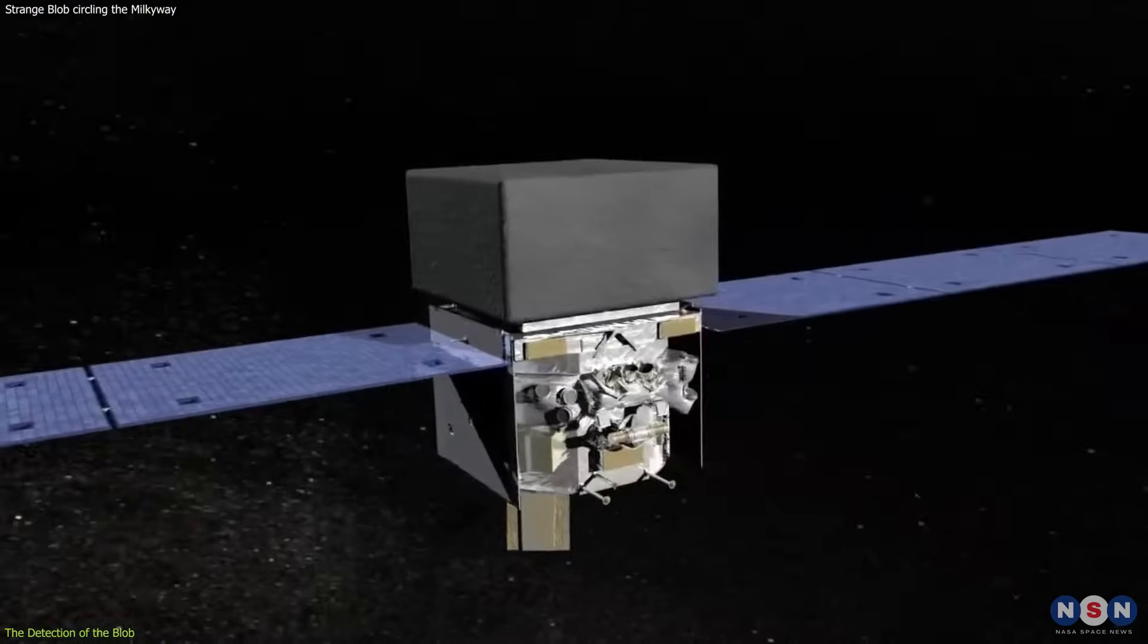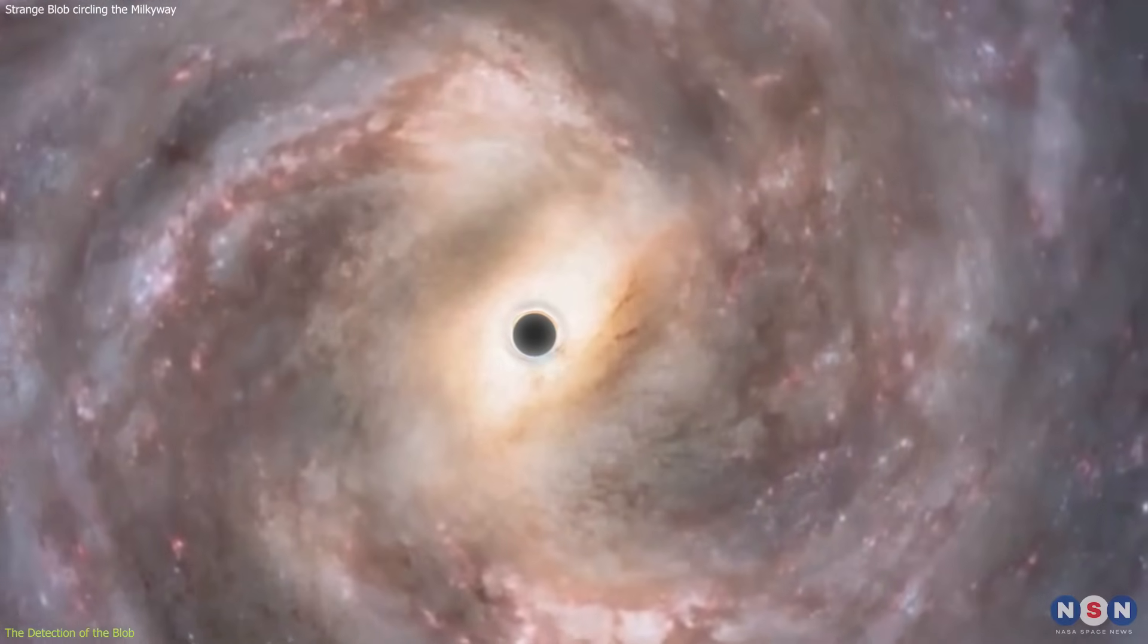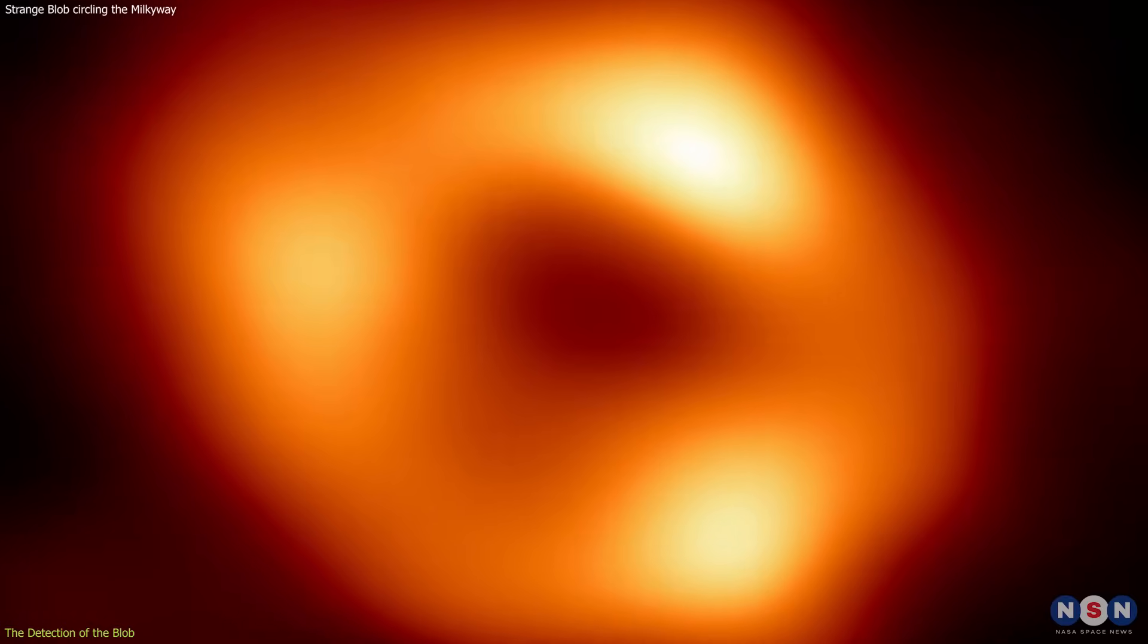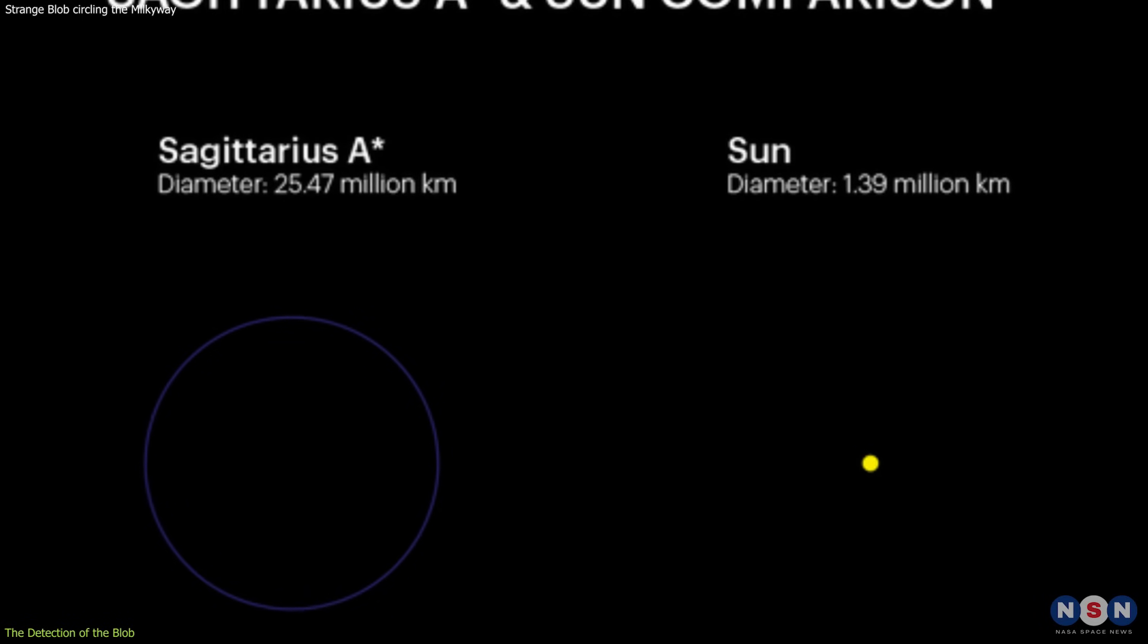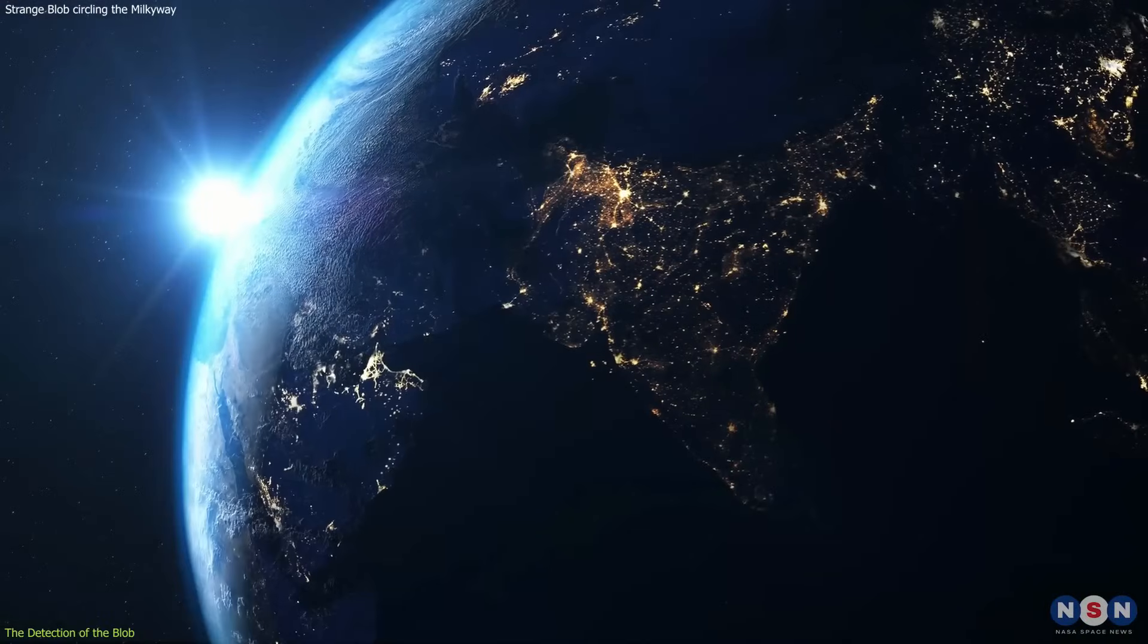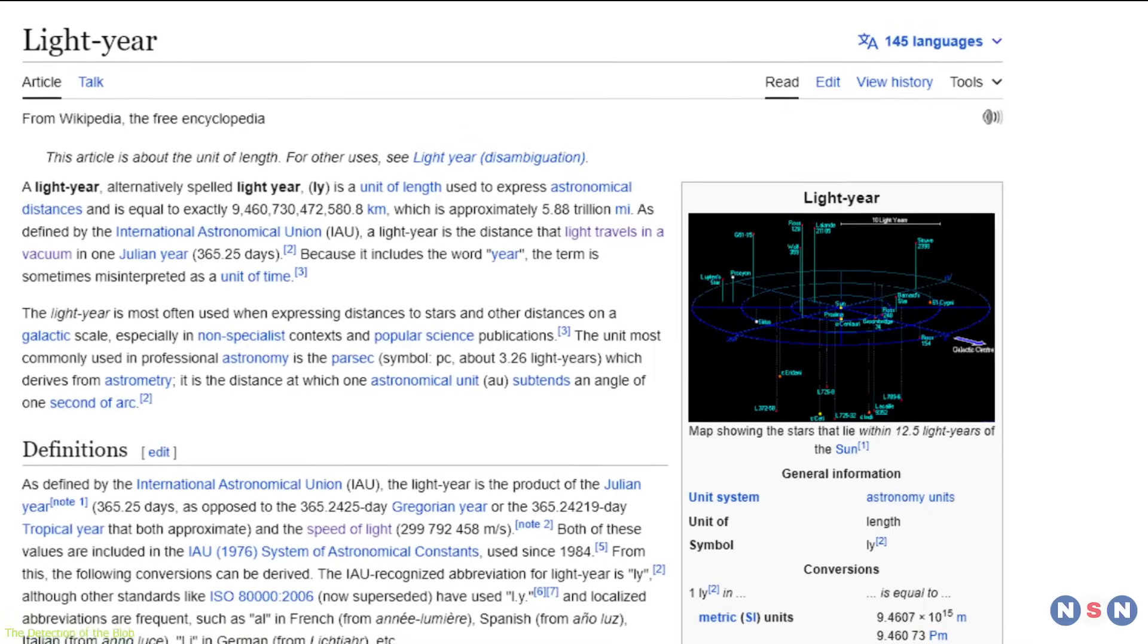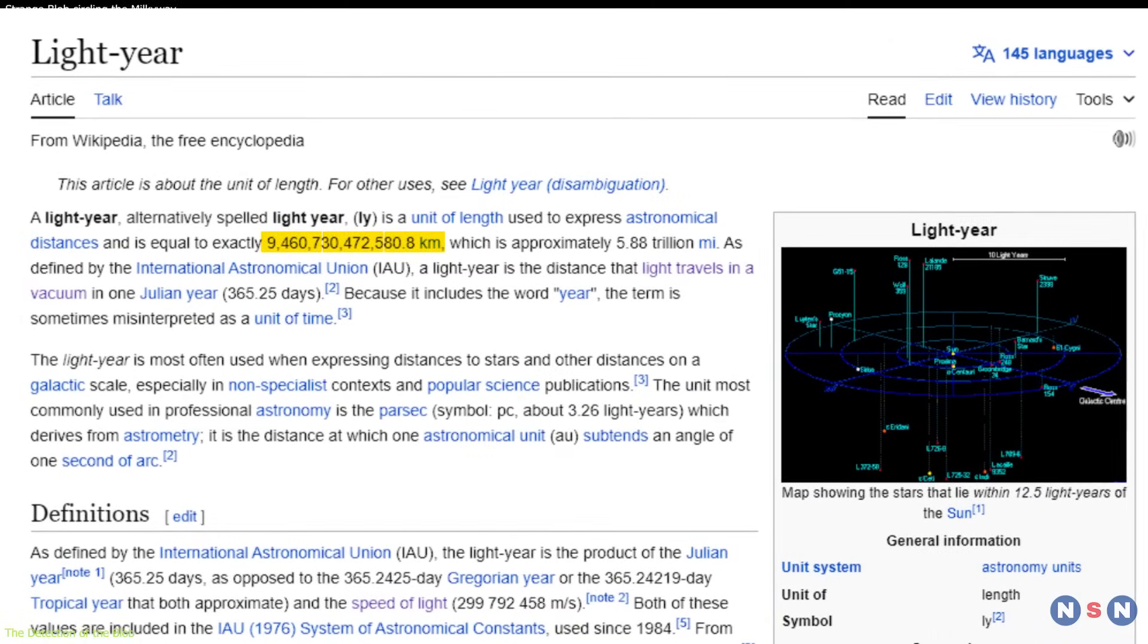One of the targets of the Fermi Telescope is the supermassive black hole at the center of the Milky Way, which is called Sagittarius A-star. This black hole is about 4 million times more massive than the Sun, and it is located about 26,700 light-years away from Earth. A light-year is the distance that light travels in one year, which is about 9.5 trillion kilometers.